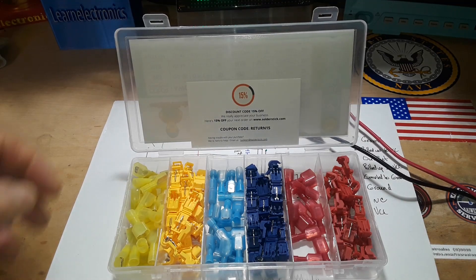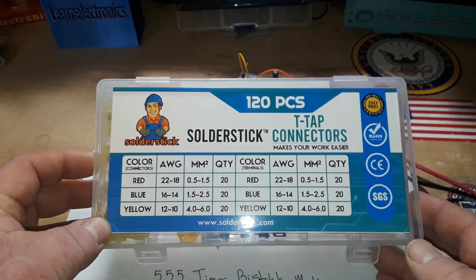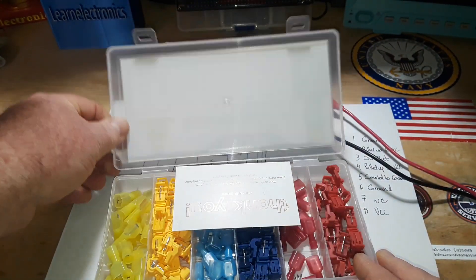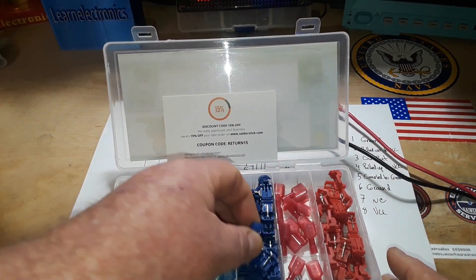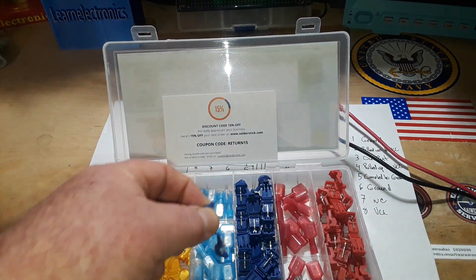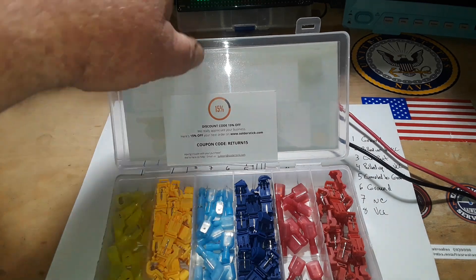This video is sponsored by our friends at Solder Stick. There'll be more about them at the end, but check out these T-tap connectors, insulation displacement connectors. If you need to break into a wire, all you need to do is clip that around it, it'll pierce the insulation, and then you simply slide on a spade connector. But more about that later.